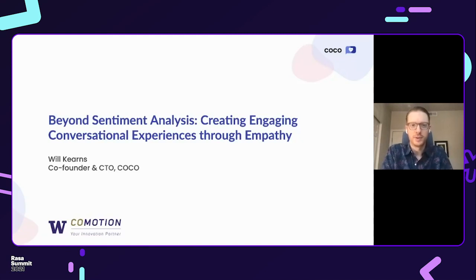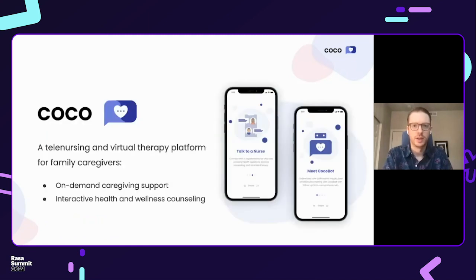Hi everyone. I'm going to discuss our approach to infusing empathy into conversational AI and how we integrate that into Rasa. Coco is a spin-out from the University of Washington that provides a tele-nursing and virtual therapy platform for family caregivers, supporting their needs through on-demand caregiving support and interactive health and wellness counseling. This platform leverages state-of-the-art research and affective intelligence to enhance empathy in both our bot and our human agents.